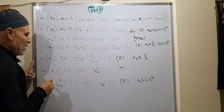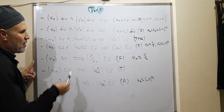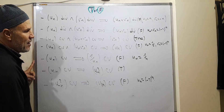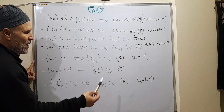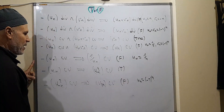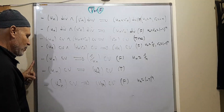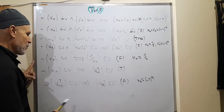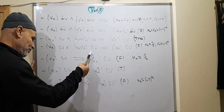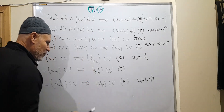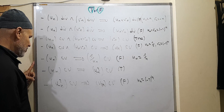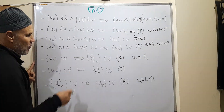If uN is convergent, is 1/uN convergent? This is false. We can take uN equal to 1/N, which is convergent. But the sequence 1/uN equals N, which is not convergent.